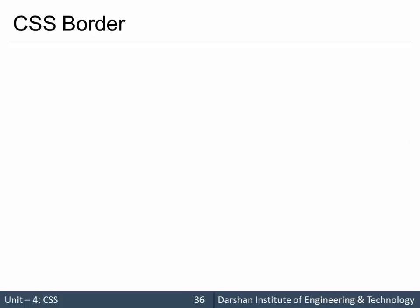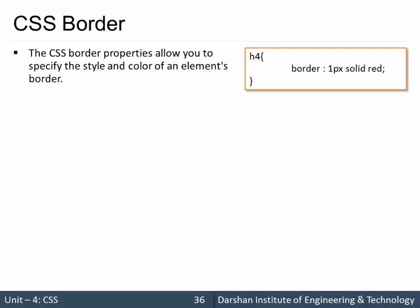Hello everyone. In today's session we are going to discuss CSS borders. We already have seen CSS border in the last topic, which was the box model, but in this particular session we are going to explore something more about borders. We have seen we can specify a border like 'border: 1px solid red', which specifies a width of 1px, solid style, and red color. That is how we specified borders in the previous session, but there is something more to that.